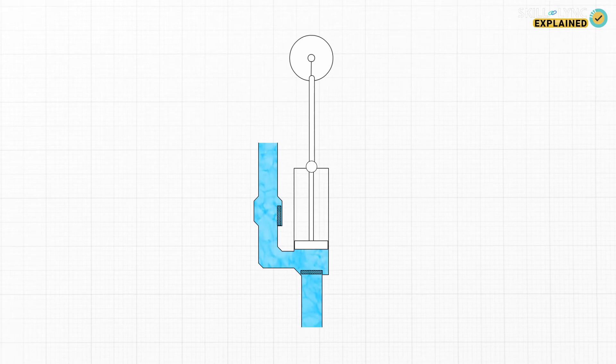But this design again doesn't allow for a continuous flow of water. In a single action pump water is delivered for every two strokes of the piston. But in double action pump this can be changed to every stroke of the piston.